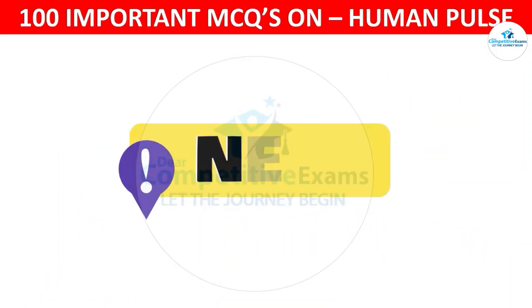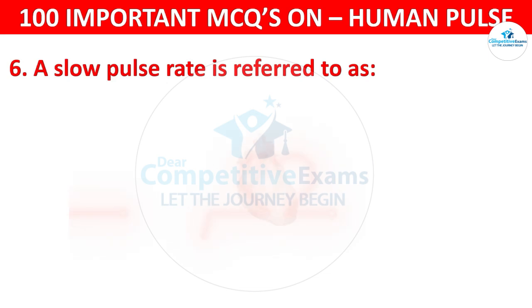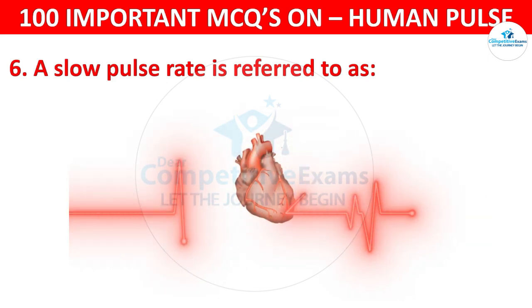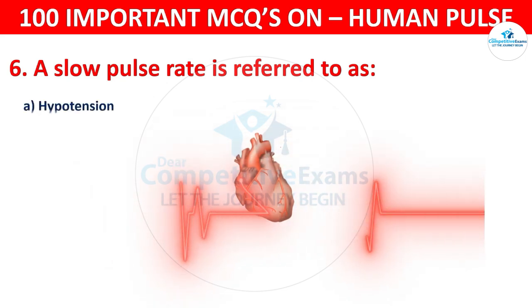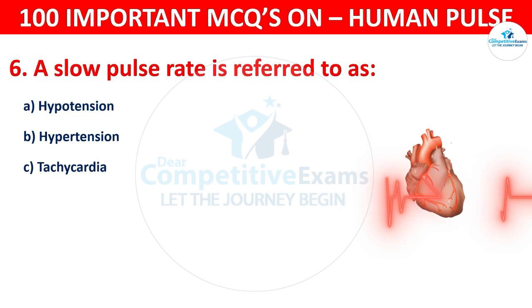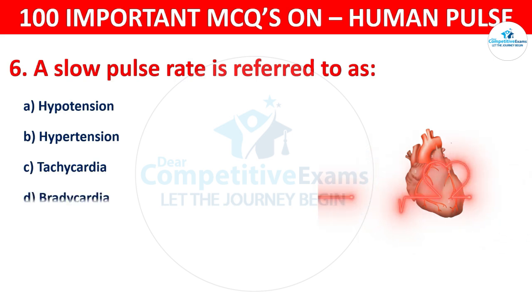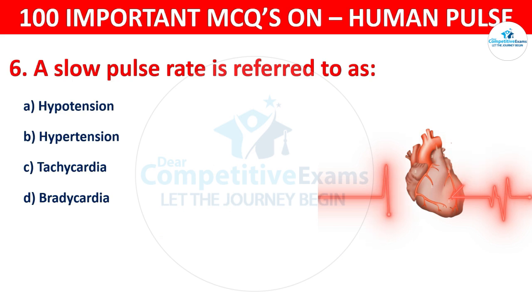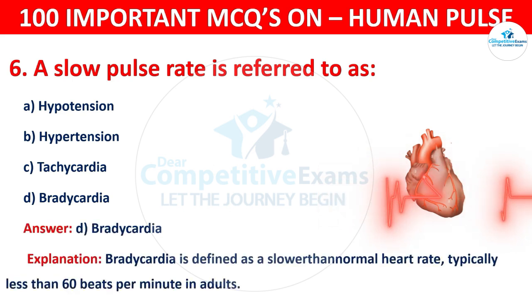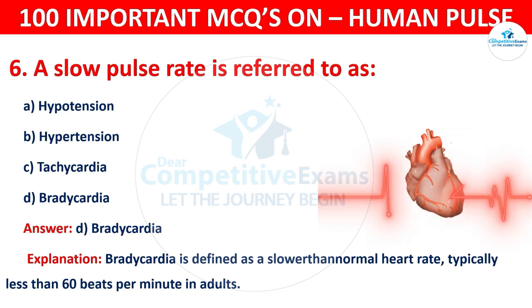Question number 6: A slow pulse rate is referred to as — the options are: Hypotension, Hypertension, Tachycardia, or Bradycardia. The correct answer is D, that is Bradycardia. Bradycardia is defined as a slower than normal heart rate, typically less than 60 beats per minute in adults.